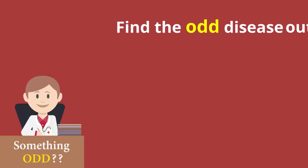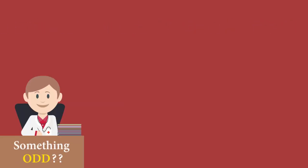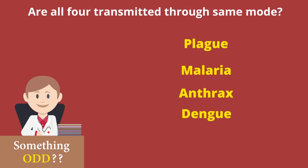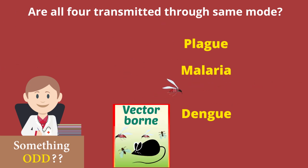Now let's move on to our last section — find the odd disease out. Are all four transmitted through the same mode? If not, pick out the incorrect one. Yes, except anthrax, all are vector-borne diseases.